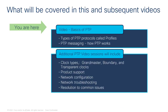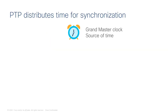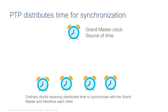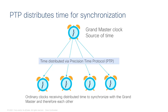We're going to cover the basics here, which will incorporate the types of PTP profiles and how messaging works — how PTP synchronization is happening. In a future video, we'll get into clock types and how to configure the network. When we're talking about distributing time, you have to have a time source. We call this the grandmaster clock — it's the source of time. And the things doing the work that need to be synchronized with the grandmaster, we call these ordinary clocks.